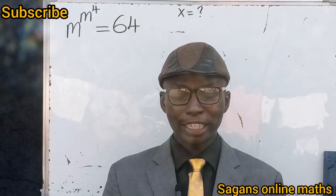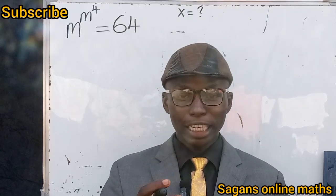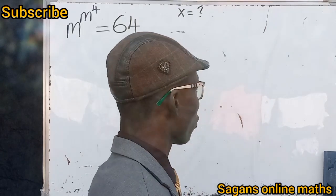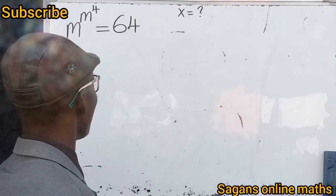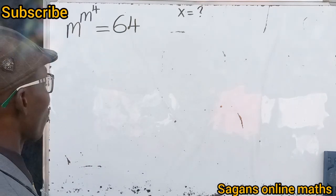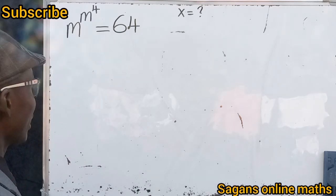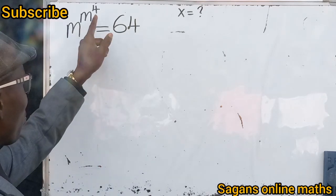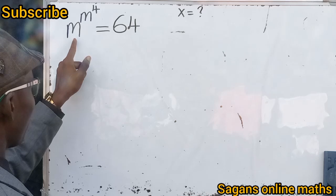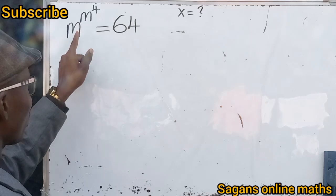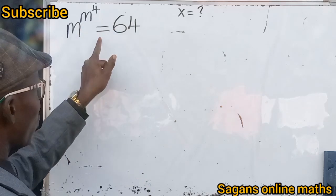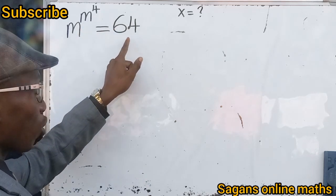Hello everyone, welcome to my channel. Let's solve this question together. You are given m raised to the power of m raised to the power of 4, which equals 64.